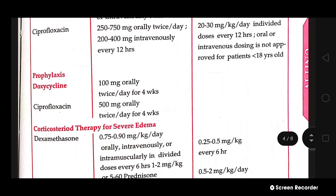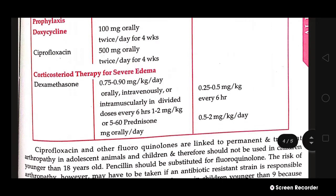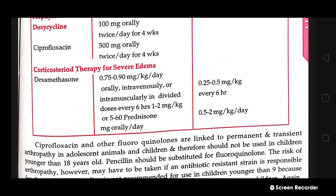For prophylaxis, adults are given Doxycycline 100 mg orally twice a day for four weeks, and Ciprofloxacin 500 mg orally twice a day for four weeks. Corticosteroid therapy with Dexamethasone (0.75–0.90 mg per kg per day orally, IV, or IM) is given for severe edema; for children, 0.25–0.5 mg per kg every 6 hours.